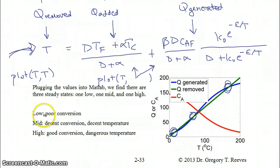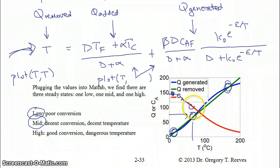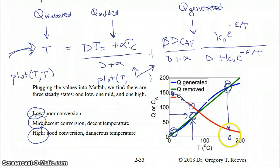The low steady state corresponds to a concentration of A very close to the feed concentration, so we have poor conversion. The middle steady state has decent conversion — about 33% — at a decent temperature. The high steady state has very high conversion, but it's at a dangerously high temperature.